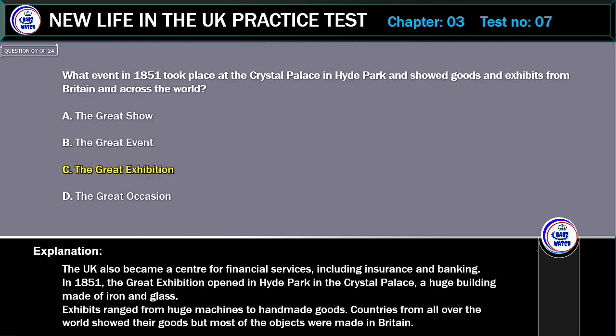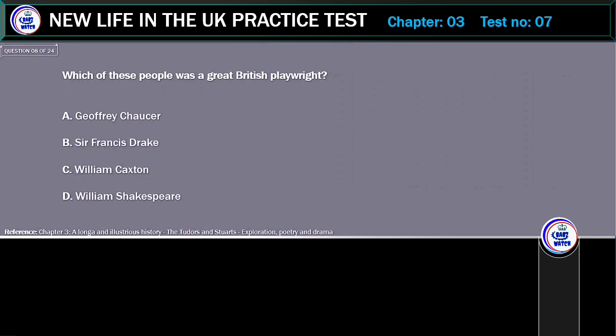Explanation: The UK also became a centre for financial services, including insurance and banking. In 1851, the Great Exhibition opened in Hyde Park in the Crystal Palace, a huge building made of iron and glass. Exhibits ranged from huge machines to handmade goods. Countries from all over the world showed their goods but most of the objects were made in Britain.